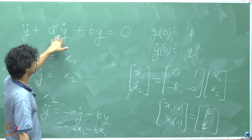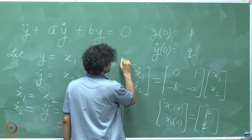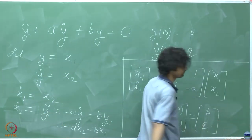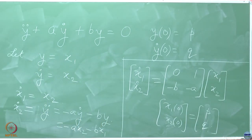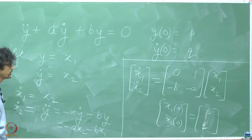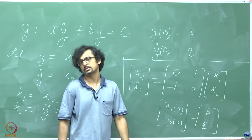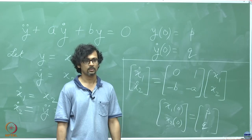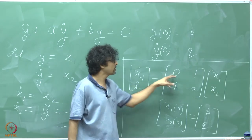Instead of solving the original second order equation, we can turn attention to this matrix system — there is no difference. One thing that happens is we have reduced a second order differential equation to two first order differential equations. But life does not get easier because these equations are still coupled.